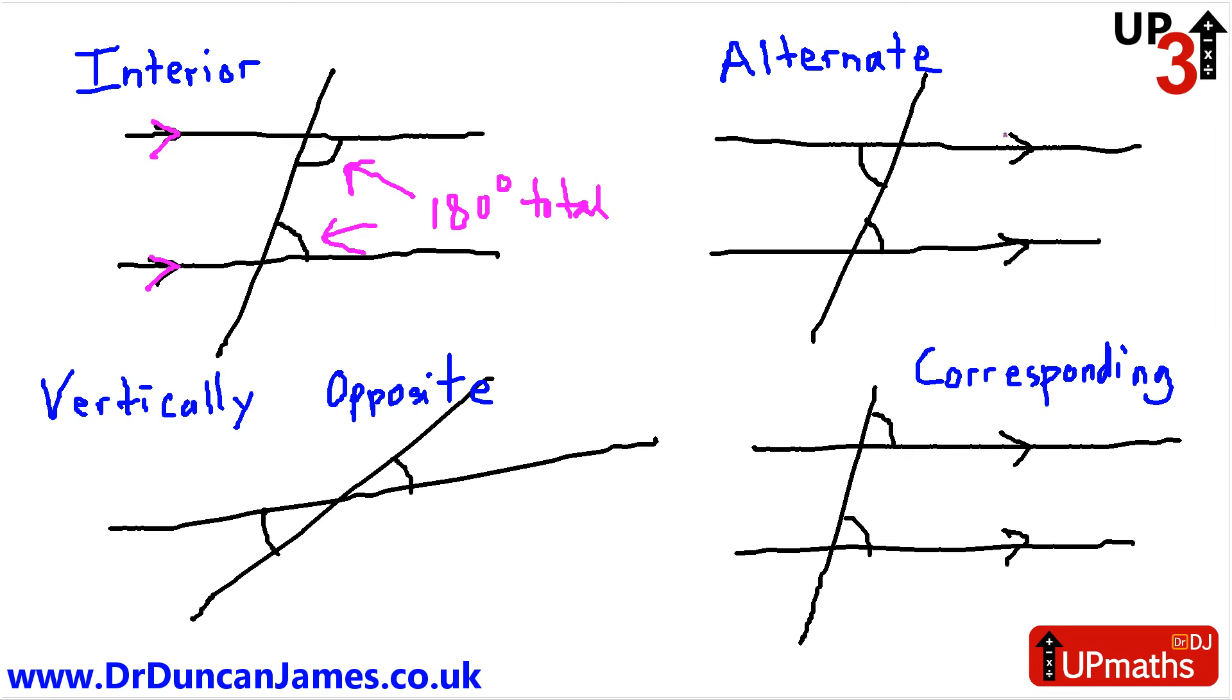If you go on the inside of the parallel lines, because you can draw the parallel line arrows anywhere you like, but if you do it on alternating sides, then they're going to be the same angle, so the same size angle.